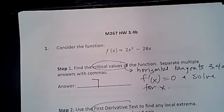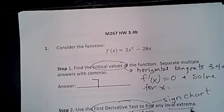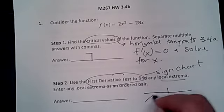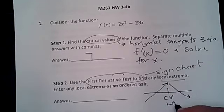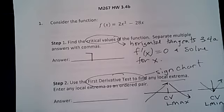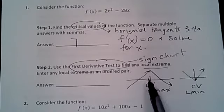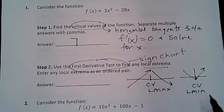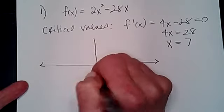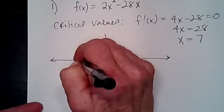Part 2 says use the first derivative test — that was our sign chart — to find any local extrema, that is the local max and local min. At your critical value, if the sign chart goes up and then down, that's a local max. If it goes down and then up, that's a local min. So we make a first derivative sign chart and put my critical value 7 on it.